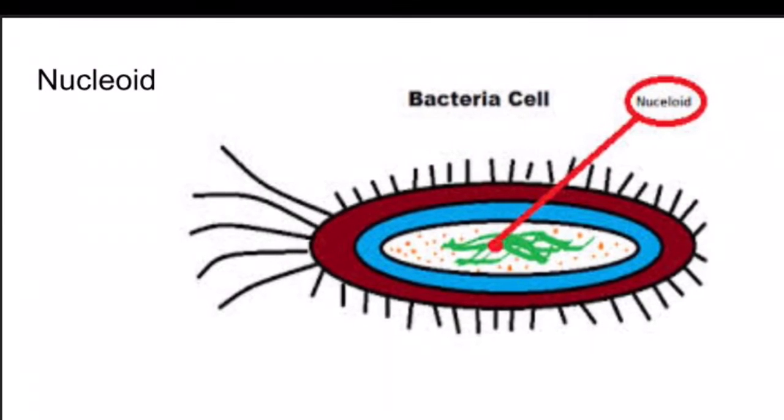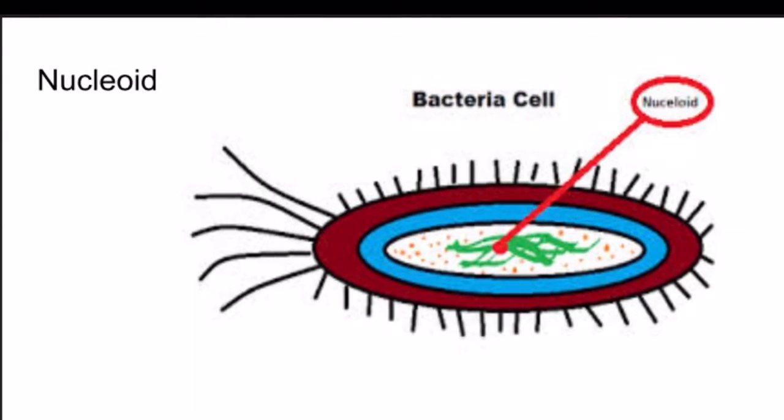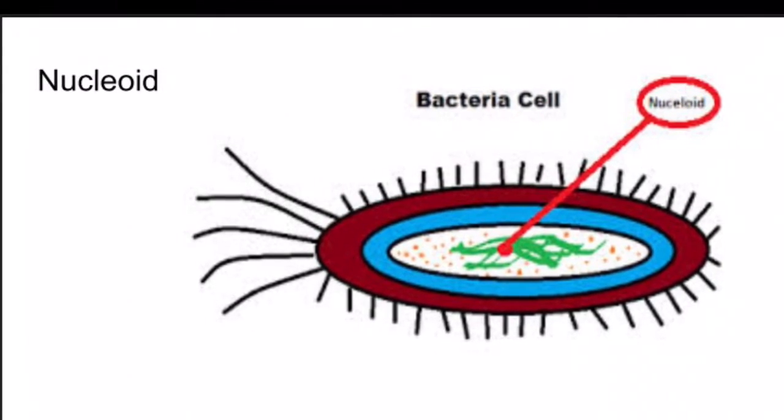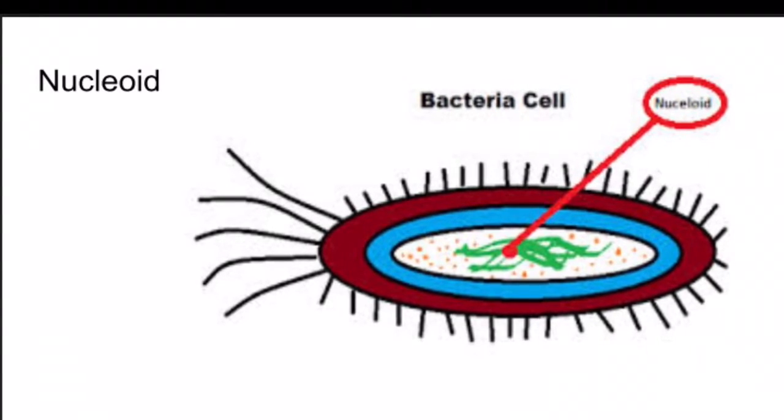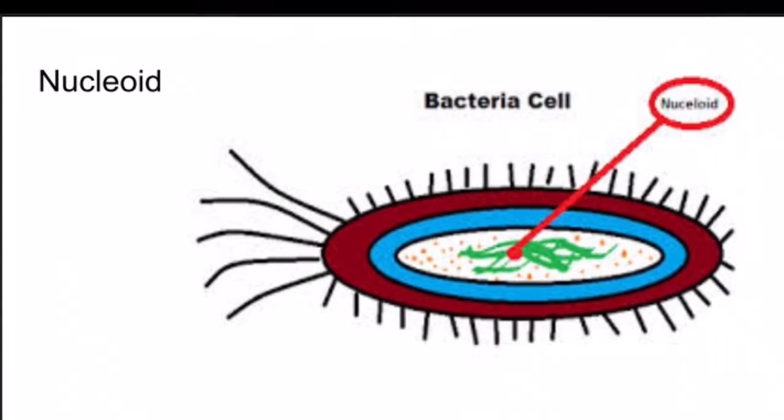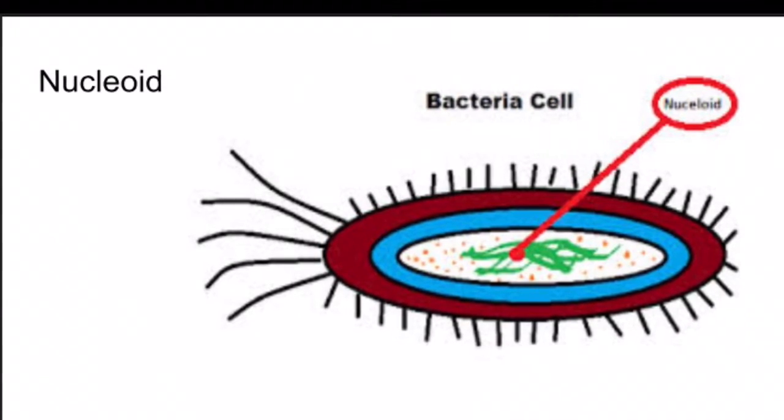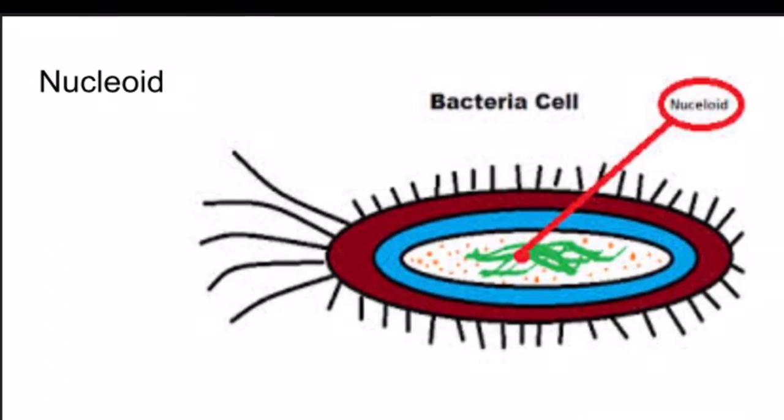Now I'm going to be talking about the nucleoid. The nucleoid is not confined by any membrane, but is still visibly recognizable. The DNA is found in this region of the bacteria cell. Chromosomal DNA is found in a region called the nucleoid. The chromosome, along with several proteins and RNA molecules, is what forms the nucleoid.